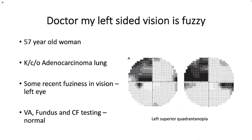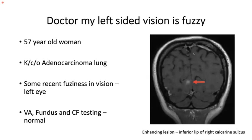A second patient — a known case of malignancy — complains that vision in the left eye is fuzzy. Visual acuity and fundus are normal. Confrontation testing is inconclusive, but formal visual fields reveal a left superior quadrantanopia. Since the superior quadrant is affected, we expect the inferior lip of the calcarine cortex to be involved — and the MRI confirms a lesion in the inferior lip of the right calcarine sulcus.